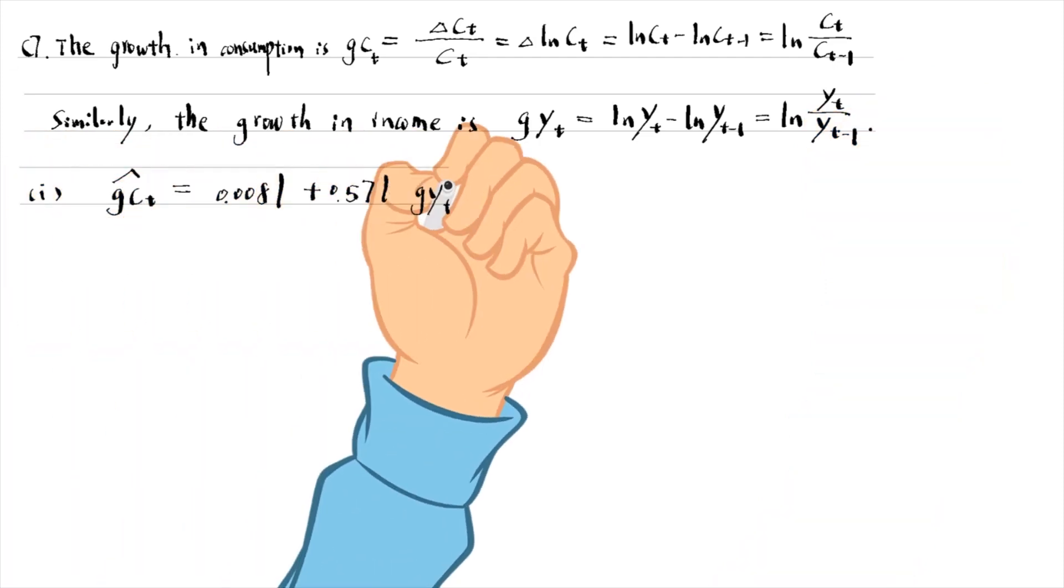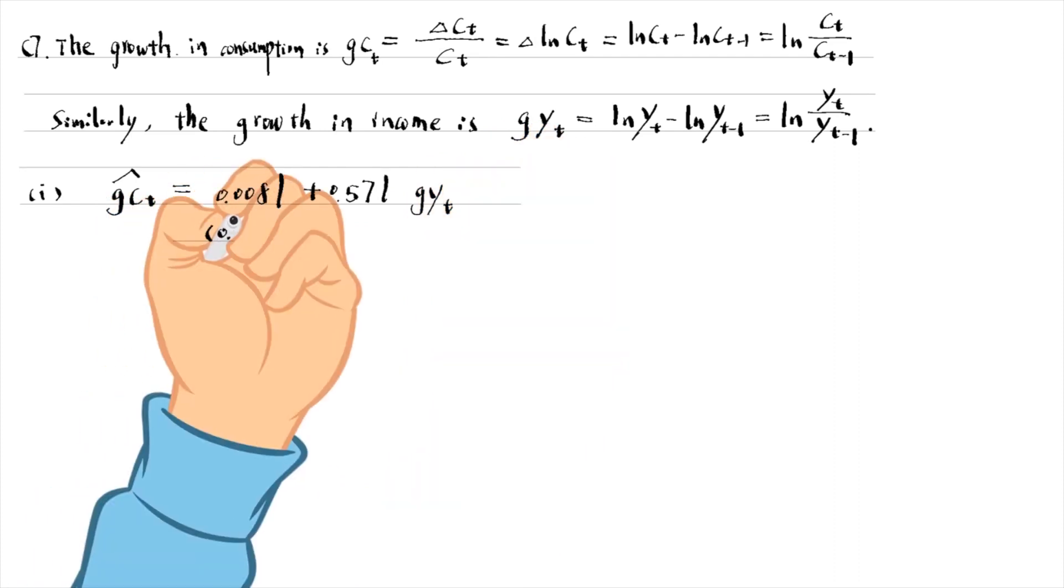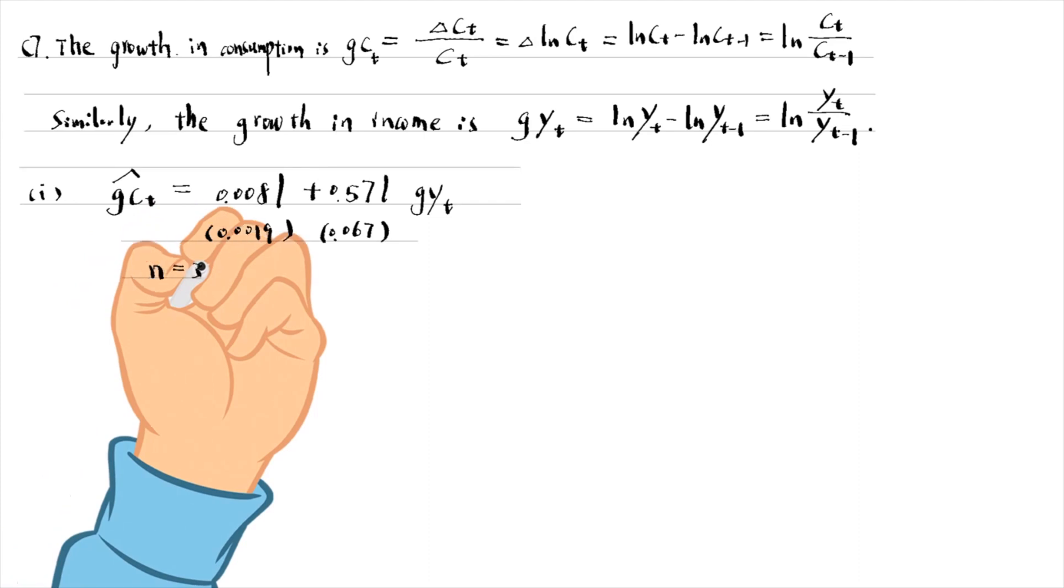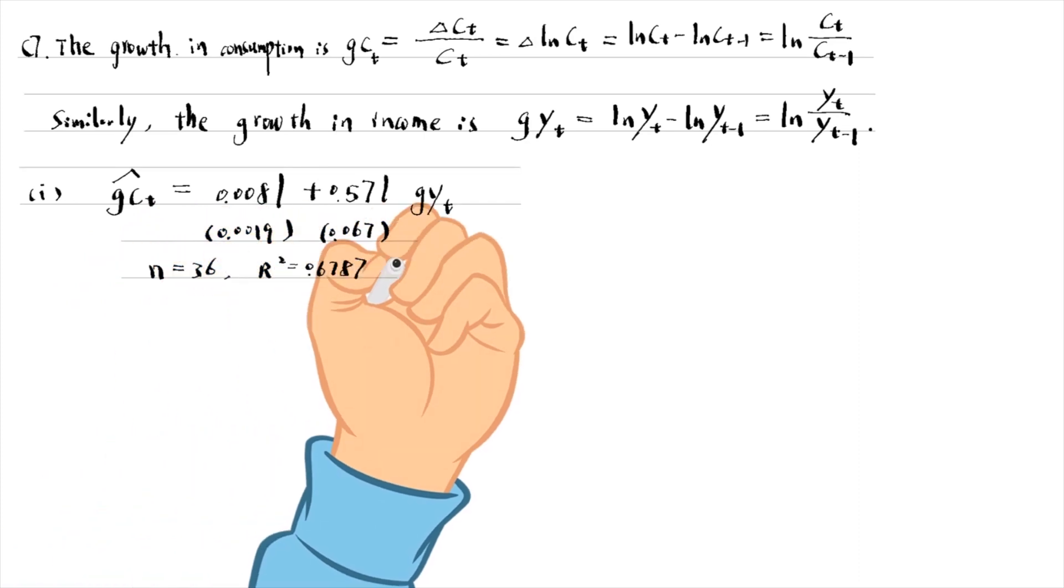The slope coefficient is 0.571. It suggests that when the income growth increases by 10 percentage points, the consumption growth increases by 5.7 percentage points on average. The effect is statistically significant at the 1% level with a t statistic of 8.47.